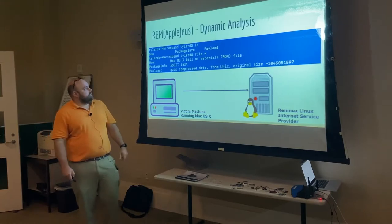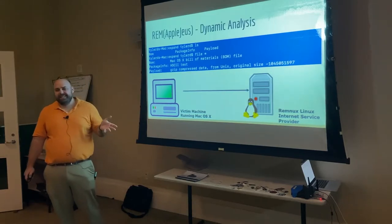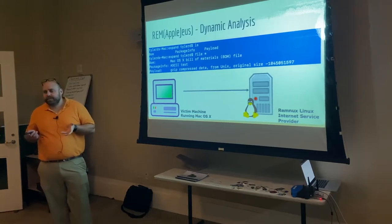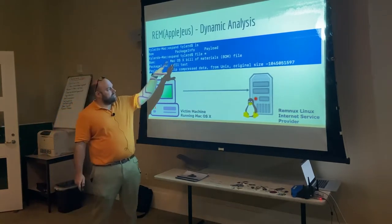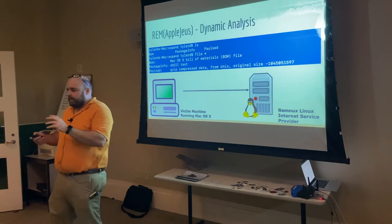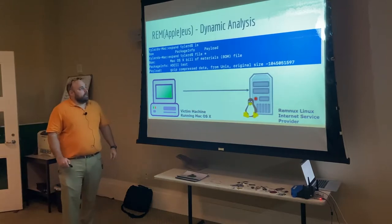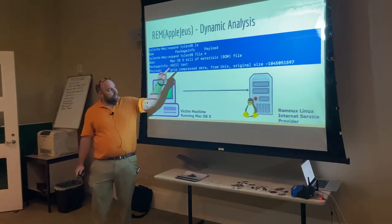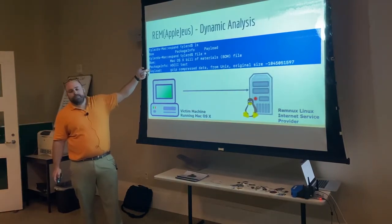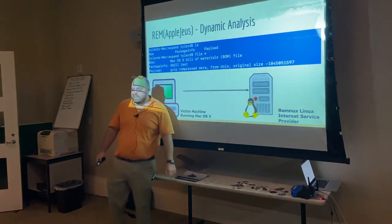What we're greeted with is a BOM — a bill of materials — which tells you the inventory of everything included. Then we have package info with some header information, and something called payload. Payload is a single compressed file. I run the file command to confirm: bill of materials, some ASCII text, and GZIP compressed data. It tells you what the original size is.